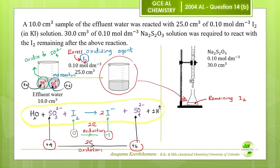When excess iodine was present, all sulphite ions oxidised to sulphate ions. Therefore, this solution contains sulphate ions and remaining I₂. That sulphate is the total amount, meaning it contains the initial sulphate as well as the new sulphate ions produced by sulphite ions. When thiosulphate was added, only this iodine reacts with thiosulphate ions. During this reaction, the iodine molecules reduce to iodide ions and the thiosulphate ions oxidise to tetrathionate ions.